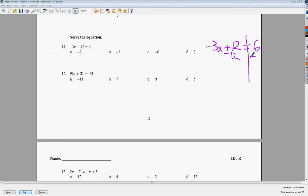Get rid of 12 is the friend of friends, so I need to subtract 12. Mark these out. 6 minus 12 is negative 6. Bring down negative 3. Divide by negative 3. X is equal to 2. So my answer to that one is D.